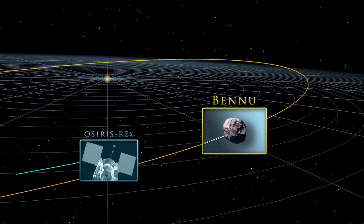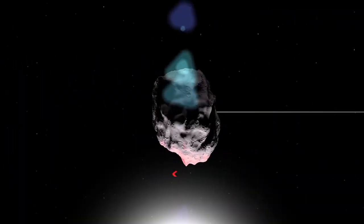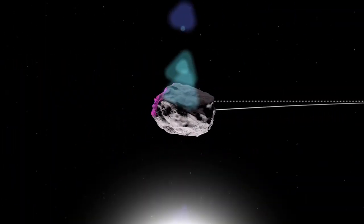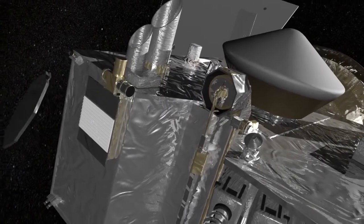Knowing the physical properties of Bennu will help scientists refine its orbit over time, including deviations caused by heating and cooling from sunlight, and it will allow them to pick a site for OSIRIS-REx's primary mission.